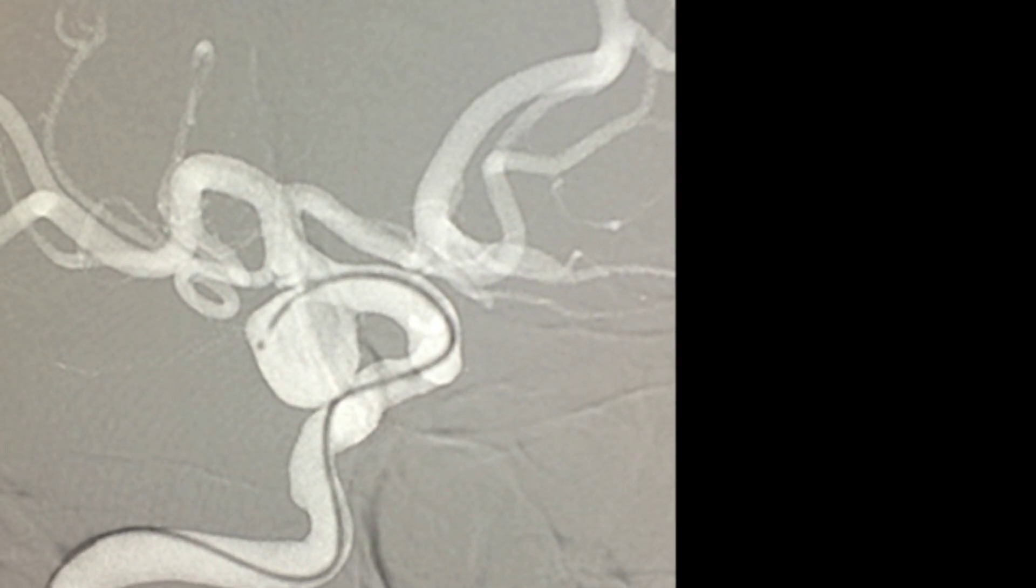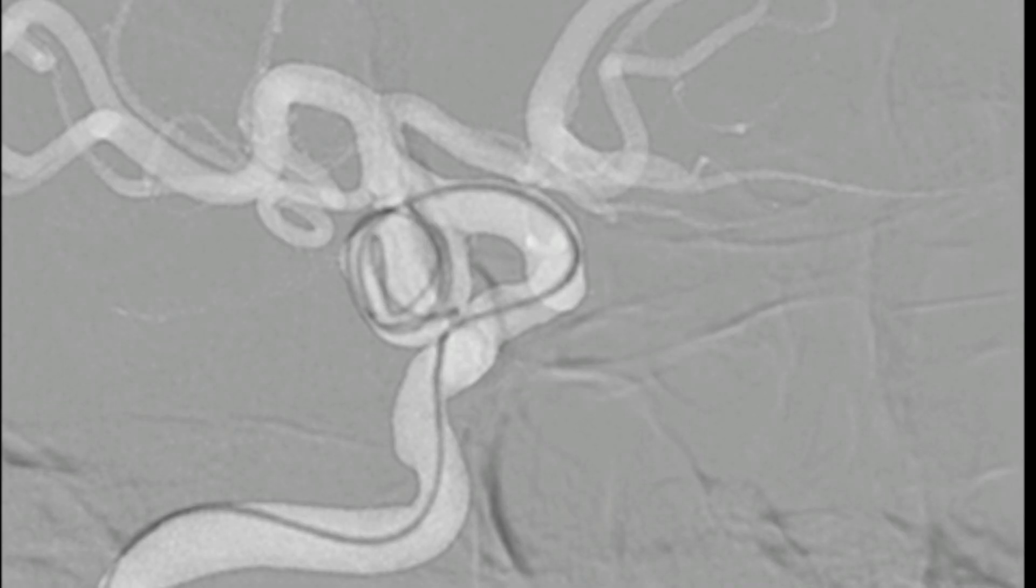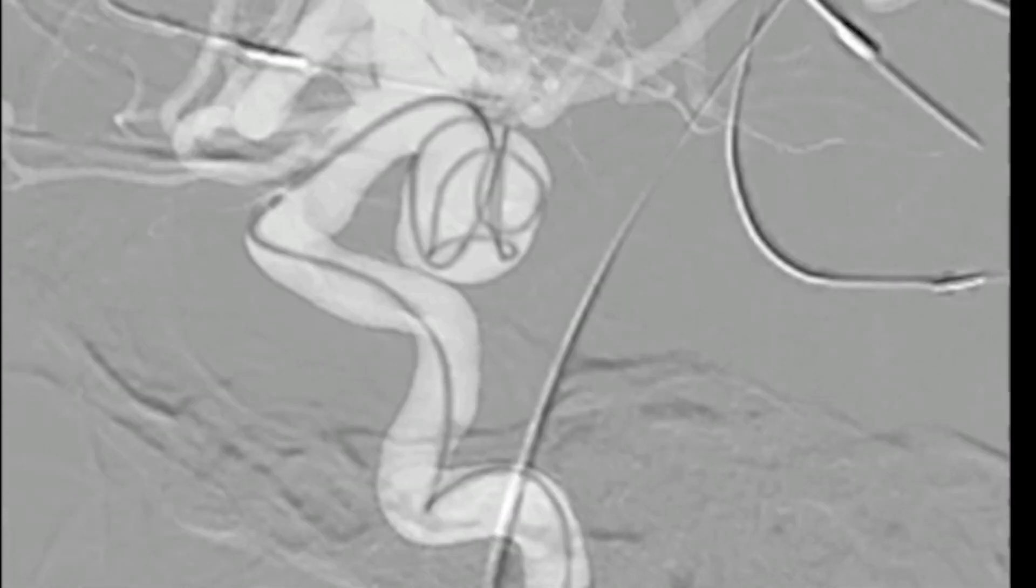The framing coil is the first coil that we use in the aneurysm and you can see that coil being placed here on AP and lateral road map angiography. This takes a complex shape to decrease the chance of the coil herniating out of the aneurysm although the aneurysm again is relatively narrow-necked.